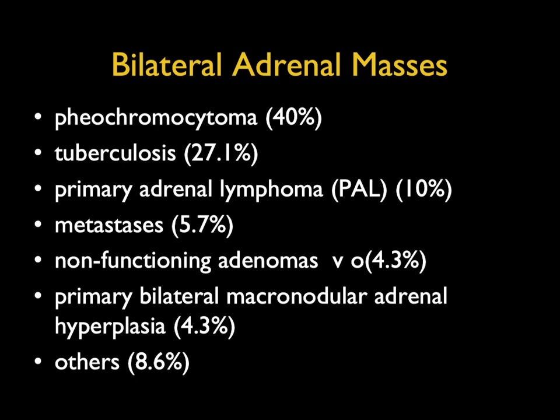For big adrenal masses, think lymphoma and metastasis. For mets, particularly when not vascular, think melanoma. The differential for bilateral adrenal masses includes adenoma, hyperplasia, mets, pheos, and lymphoma. We'll stop here and come back to look at bilateral adrenal masses focusing on metastasis.